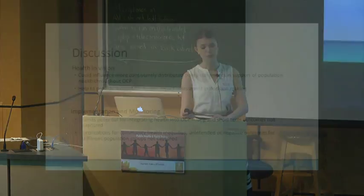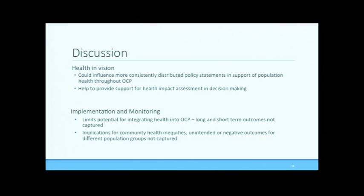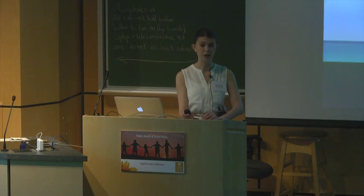I'd like to consider some of these weaknesses in more detail. The OCP community vision statement sets the stage for goals, objectives, and ultimately policies — it's kind of like a trickle-down effect. A statement that clearly articulates community health could help influence a more consistent distribution of healthy policy statements and may also help to provide support for health impact assessment in decision-making, as decision makers look to the OCP for guidance. The lack of implementation and monitoring was a surprising finding because without these systems, there is little accountability for policy outcomes and health outcomes may not be attributed to OCP implementation. Unintended or negative outcomes for different population groups may also go unnoticed, which may aggravate or create health inequities within the community.